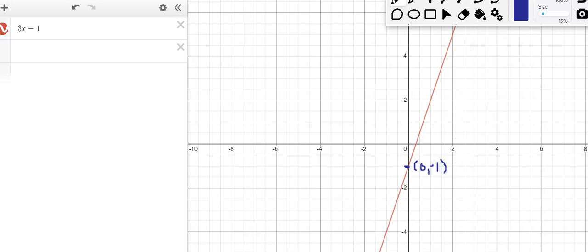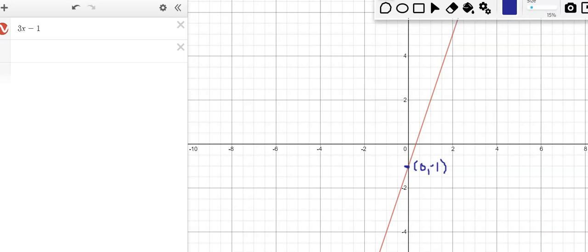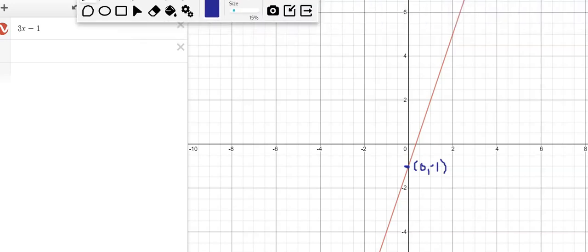And then, it's kind of hard to see. Let me see if I can move this toolbar. Right over here on the line, we can see this point, and this point is 2, 5.